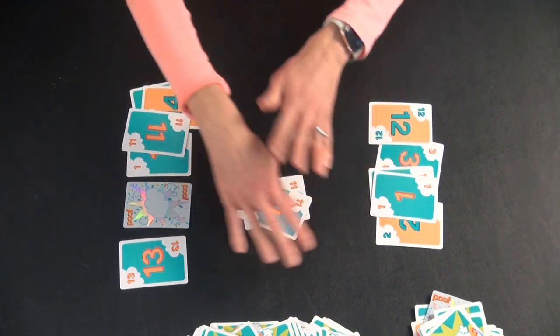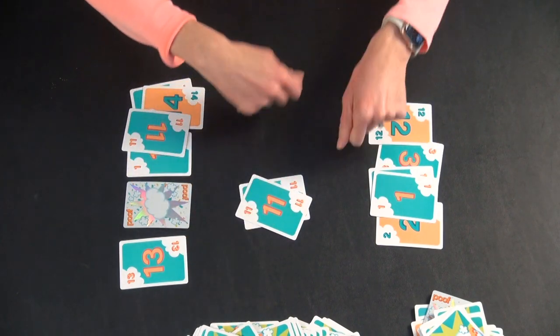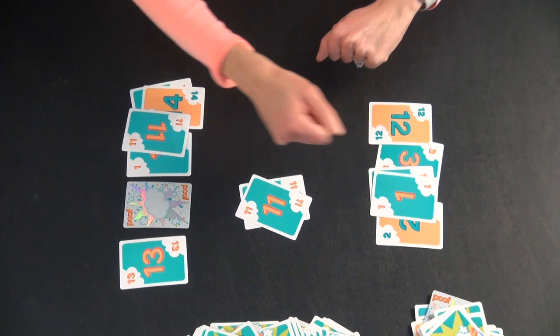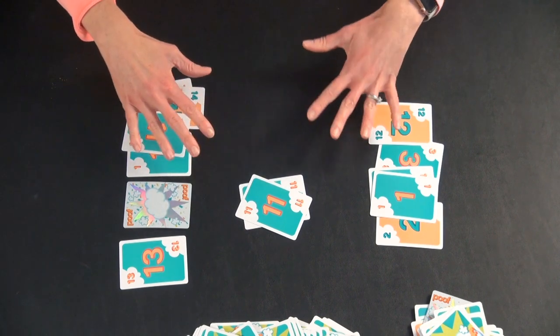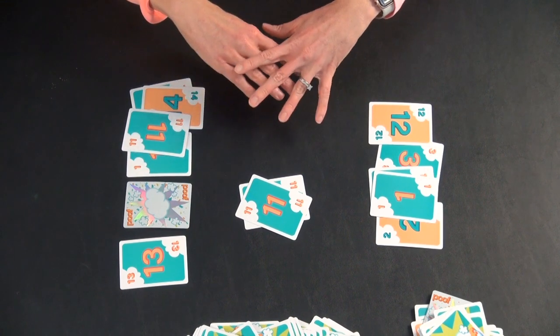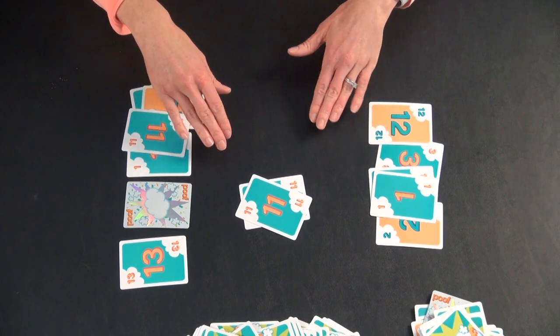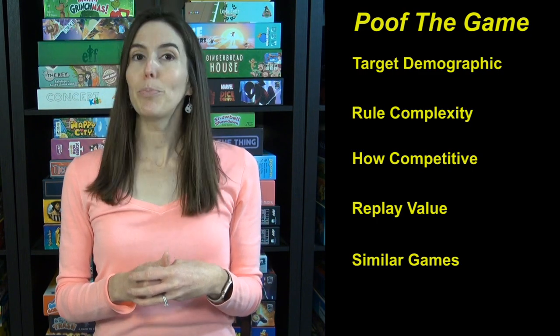At the end, you would just shuffle them all up again, pick out. Everybody gets 19 cards. You set up your round, pick out cards again to see who gets to go first for the round. And you can play, you're supposed to play up to seven rounds. And at the end of seven rounds, you tally up scores, and whoever has the lowest total is the winner. So that's how to play poof the game.